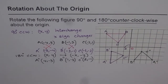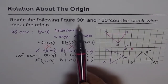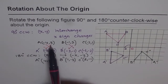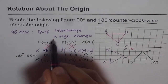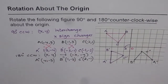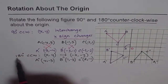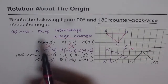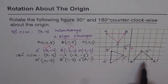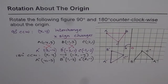Let's review. For a 90 degrees counterclockwise rotation, swap X and Y and make X negative. For a 180 degrees counterclockwise rotation, just change the signs for both X and Y. Plot your points, connect them, and get the result. That is how you do rotation about the origin for the counterclockwise direction.